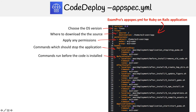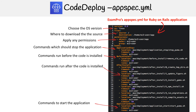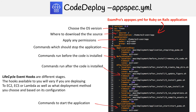Let's look at some of the other hooks. We have BeforeInstall — that's before the code has been downloaded to your server — and AfterInstall for things you'd want to happen afterwards, and then commands to restart the application. The lifecycle event hooks are going to be different based on whether you're using EC2, ECS, or Lambda, so you have to look up the documentation for what's available. But this is for an EC2 instance, which is the most common use case.